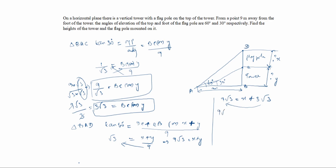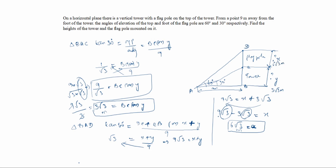So 9√3 minus 3√3 equals x. Since √3 is common, we get (9 − 3)√3 = 6√3 = x. So x equals 6√3 meters. The height of the tower y is 3√3 meters and the height of the flagpole x is 6√3 meters. Thanks for watching this video.